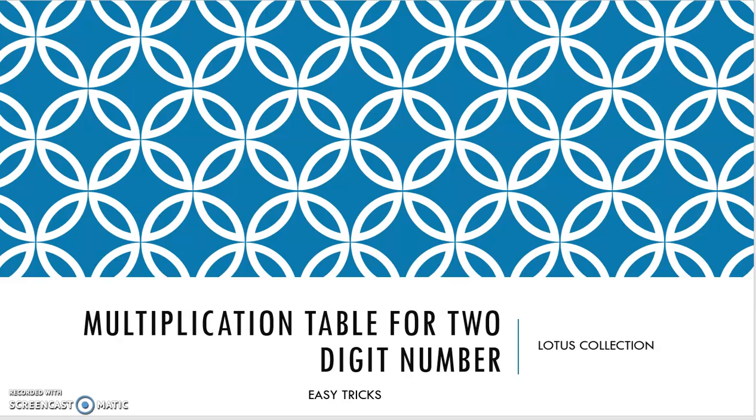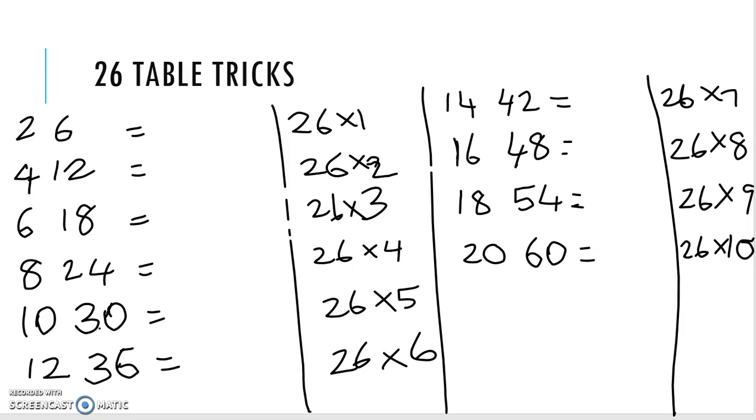This multiplication table tricks. Let's look at 26 table tricks. First, 2 table and 6 table order.